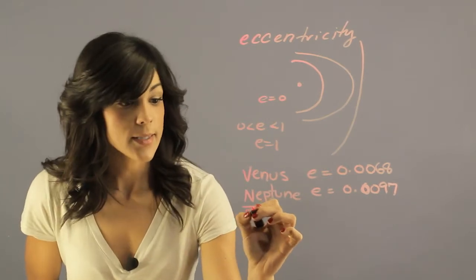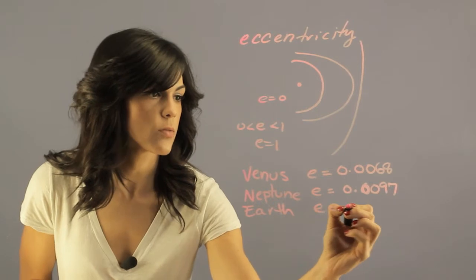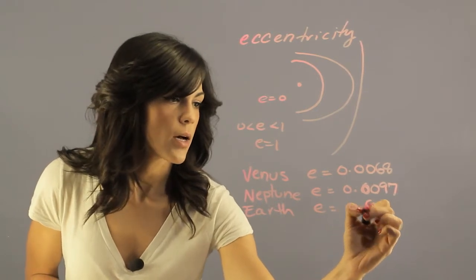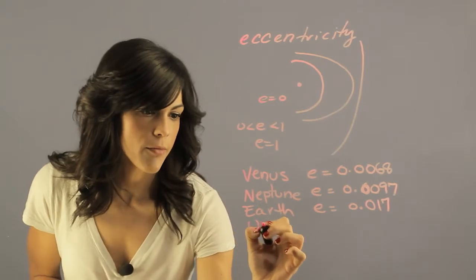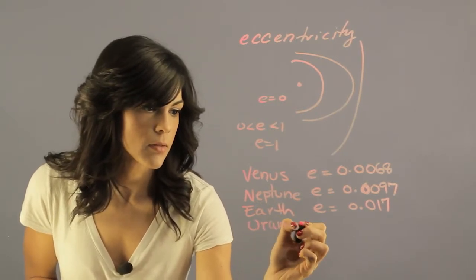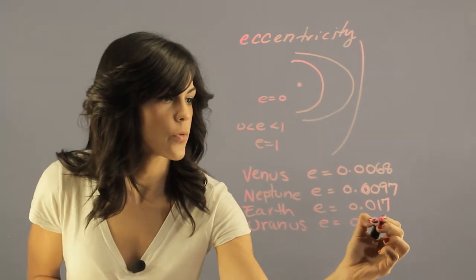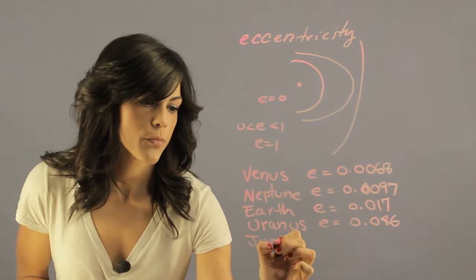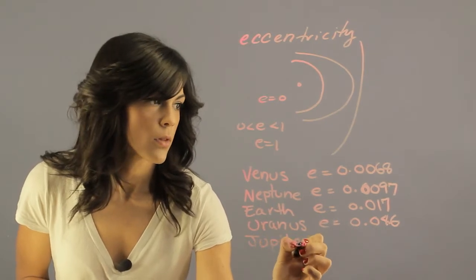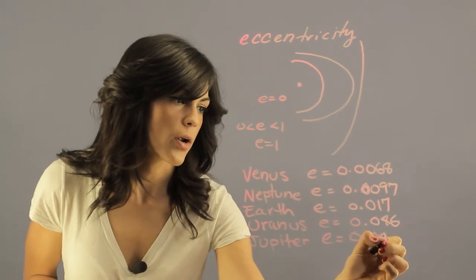The next one is us, Earth, and Earth has an eccentricity of 0.017. Then we have Uranus with an eccentricity of 0.046, and finally we have Jupiter with an eccentricity of 0.048.